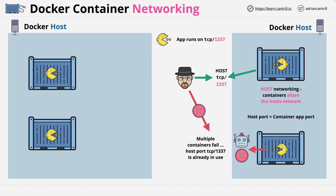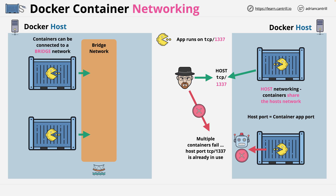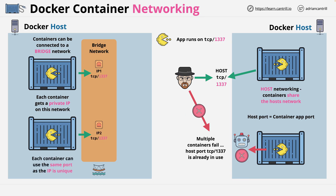This problem is fixed with bridge networking. With this network type, a bridge network is created separately, and containers can be connected to it. Each container gets its own unique IP address on this network, so each container can use the same port because its IP address is unique. Container 1 has its own IP on the bridge network, so IP1 on TCP port 1337 runs the application in container 1. Container 2 has its own IP2, and also on TCP port 1337 runs the same application in container 2.